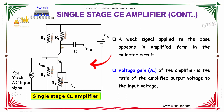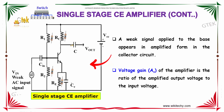So, the voltage gain AV of the amplifier is the ratio of the amplified output voltage to the input voltage.